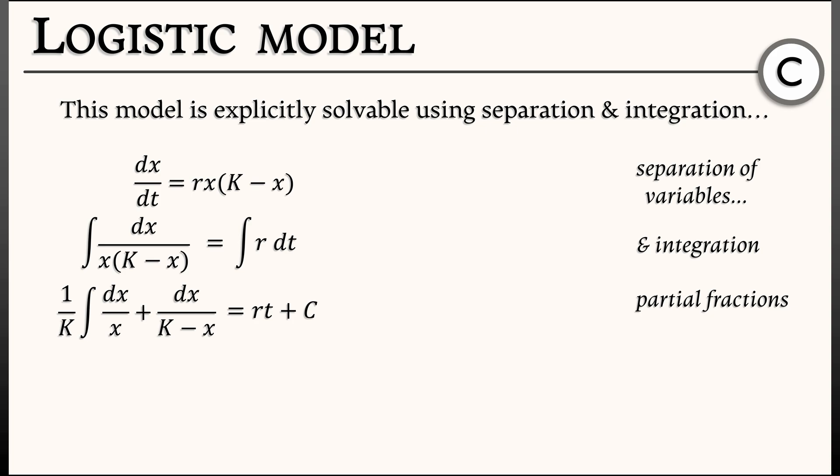We multiply the entire equation through by k. On the right-hand side, we get rkt plus some new constant c1, which is k times our original constant c. On the left, the integral of dx over x gives log of x, and the integral of dx over (k minus x) gives minus log of (k minus x). Combining them as a quotient, we get the log of the absolute value of x over (k minus x).